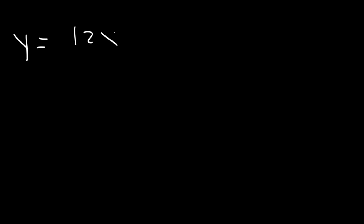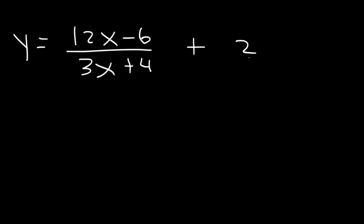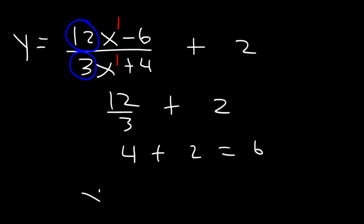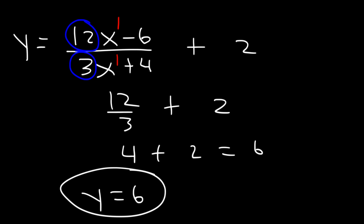Try this one: 12x minus 6 divided by 3x plus 4, plus 2. The degree of the numerator is the same as that of the denominator, so divide the coefficients attached to those variables. It's going to be 12 over 3, plus the 2 we see here. 12 over 3 is 4, and 4 plus 2 is 6. So the horizontal asymptote is y equals 6.